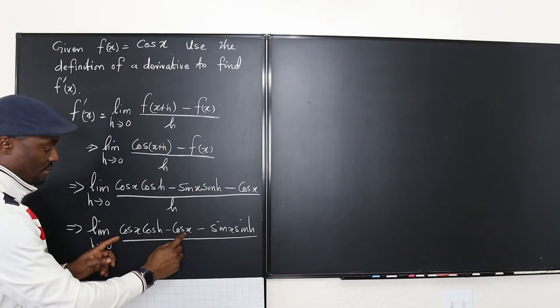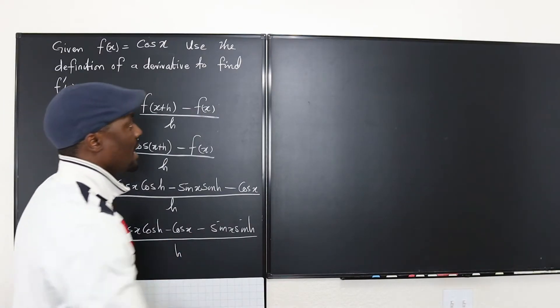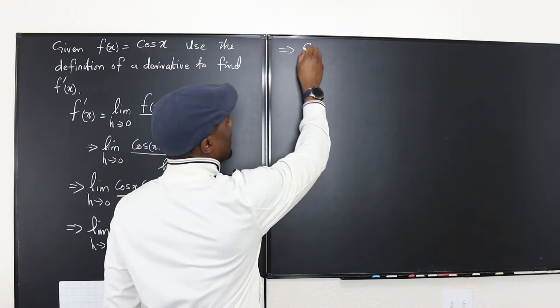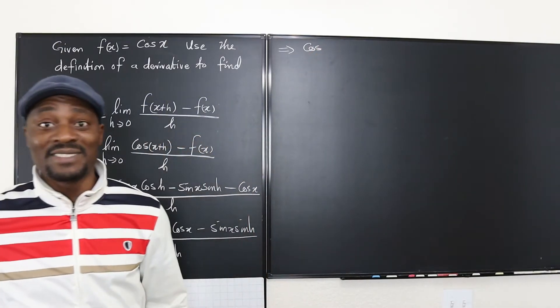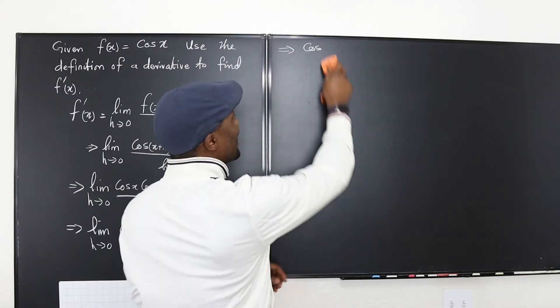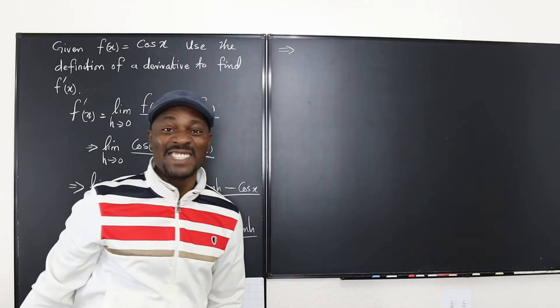So I'm gonna factor this now, take out the cosine h. So this implies the limit. Hey we got to keep writing the limit. Never forget to write the limit. Otherwise what you're writing is a lie.